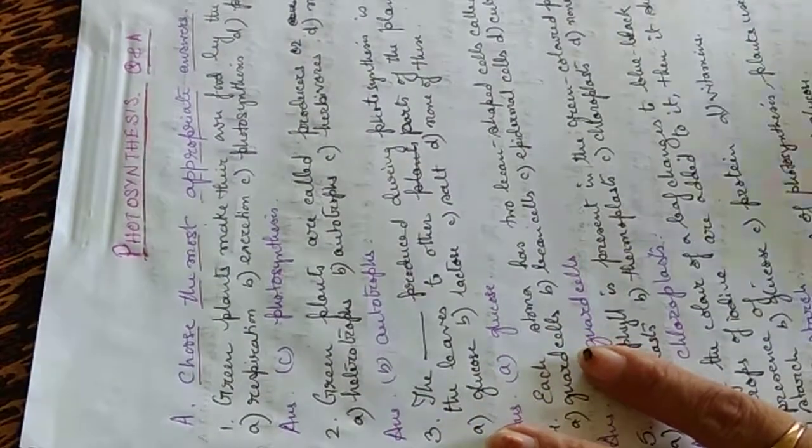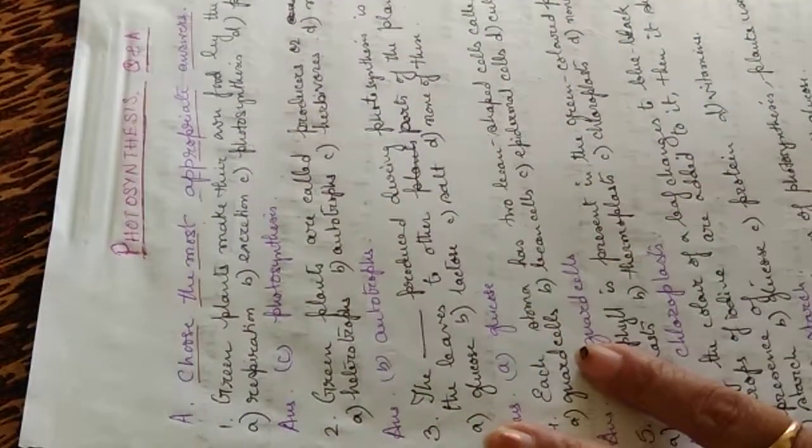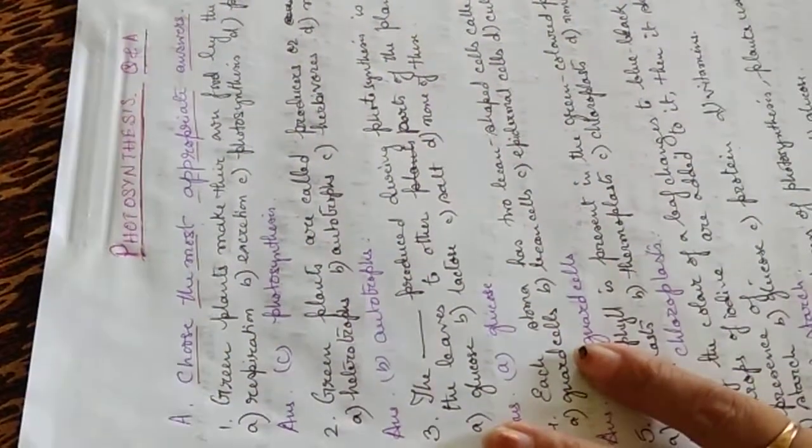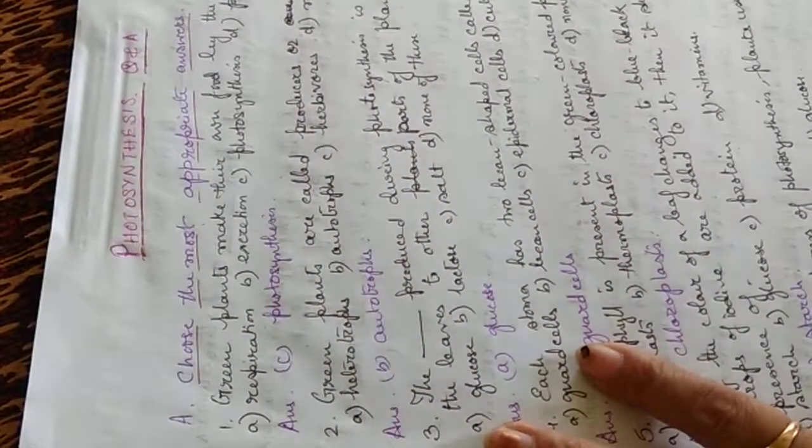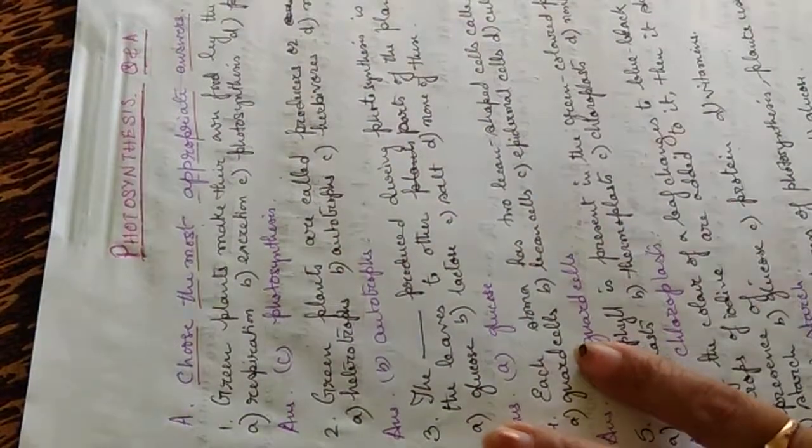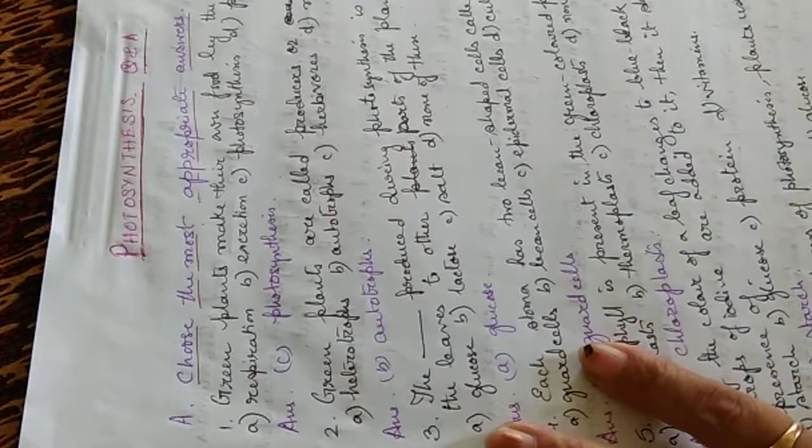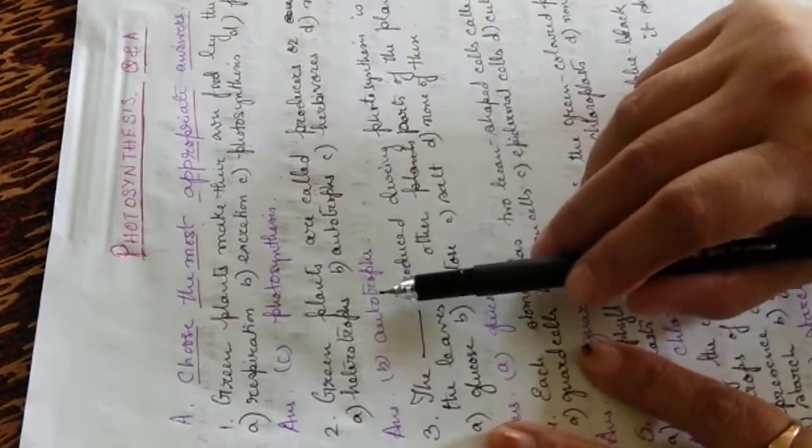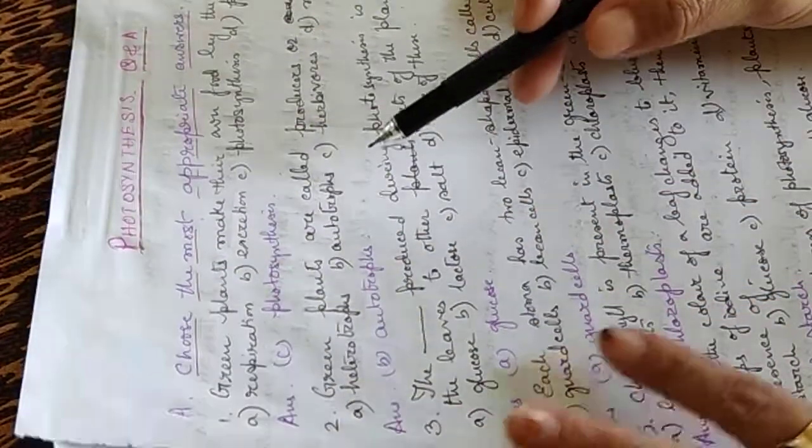Green plants are called producers or - options are Heterotrophs, Autotrophs, Herbivores, and none of these. The answer is Autotrophs, the B answer point.